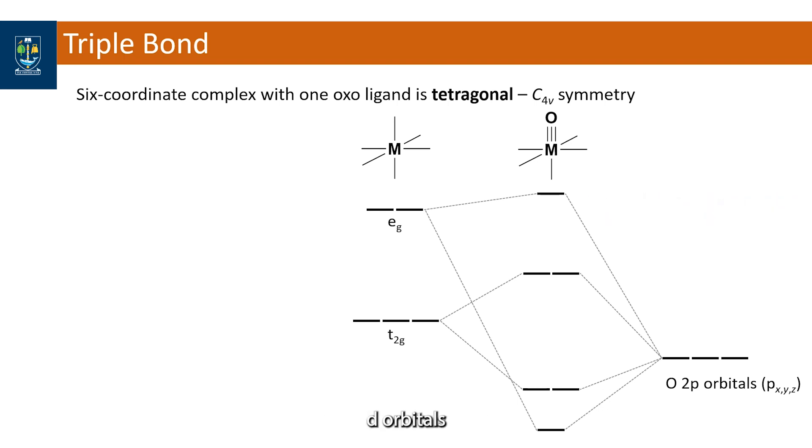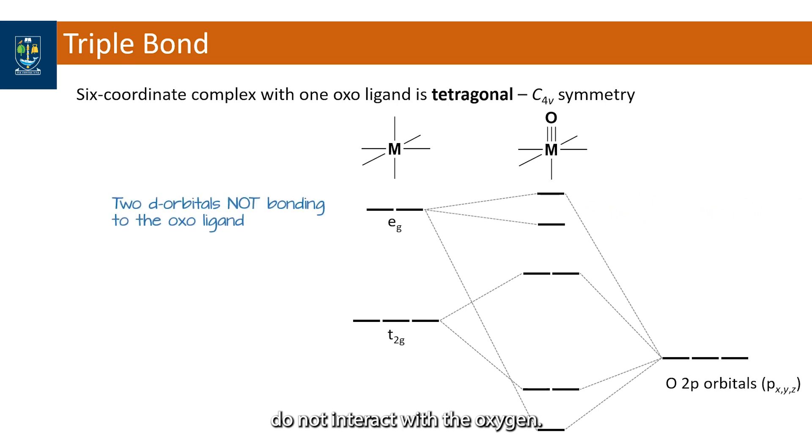The two remaining d orbitals do not interact with the oxygen. The dx squared minus y squared is interacting with the equatorial ligands of our tetragonal complex. The dxy orbital is non-bonding.